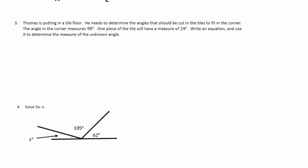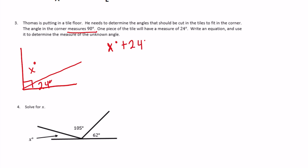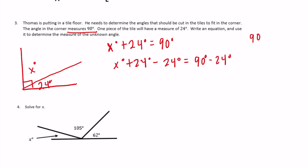Number 3. Thomas is putting in a tile floor. He needs to determine the angles that should be cut in the tiles to fit in the corner. The angle in the corner measures 90 degrees, and one piece of tile will have a measure of 24 degrees. Together they are 90 degrees, so our equation is x degrees plus 24 degrees equals 90 degrees. Subtracting 24 from both sides: x equals 90 minus 24, which is 66 degrees. So that missing piece is 66 degrees.